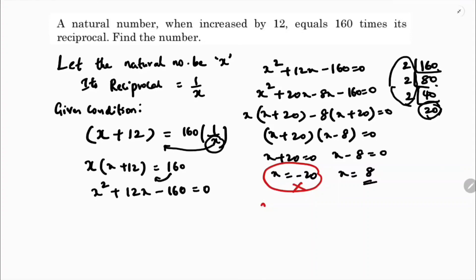The number increased by 12: x plus 12, which is 8 plus 12, equals 20. And 160 times its reciprocal: 160 times 1 by 8, which equals 20. This verifies the answer. The natural number is 8.